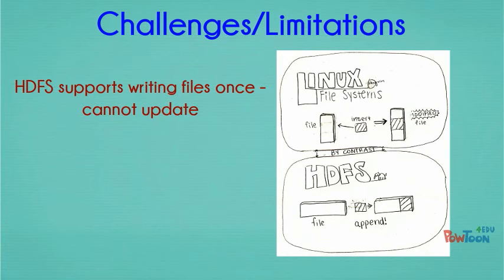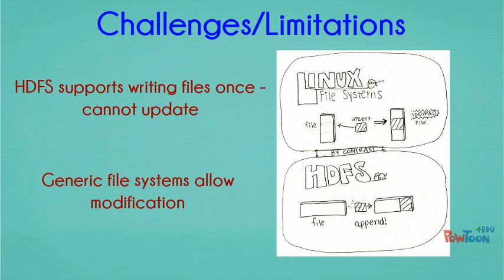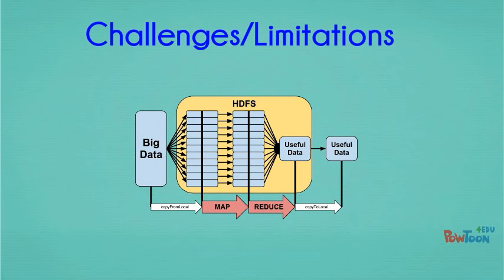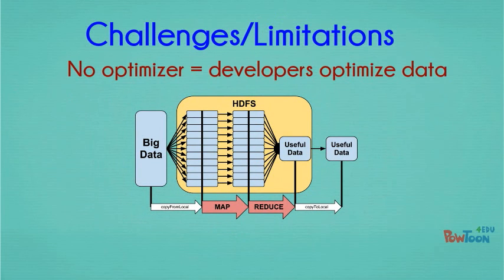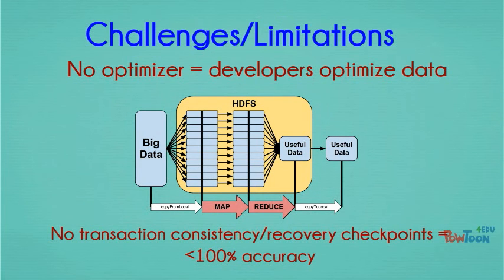HDFS supports writing files once — they cannot be updated. This is a stark difference between HDFS and a generic file system such as Linux, where files can be modified. The downsides of HDFS come from its strengths: it has no optimiser, so developers will need to optimise their own data flow. Because it was built to be a file system, there is no notion of transaction consistency or recovery checkpoints.